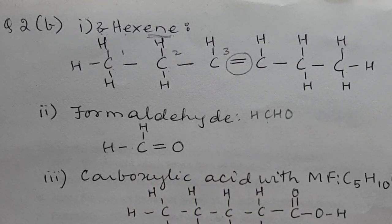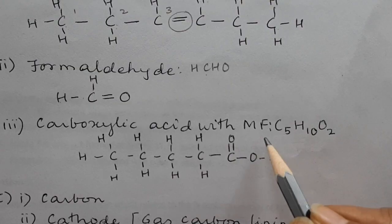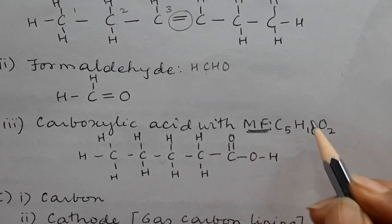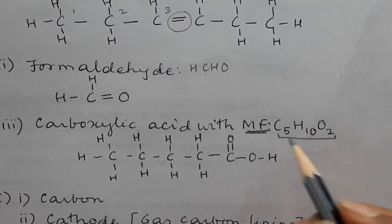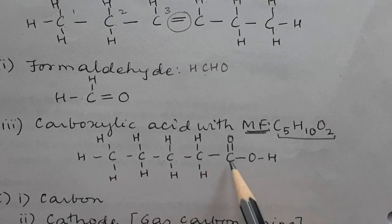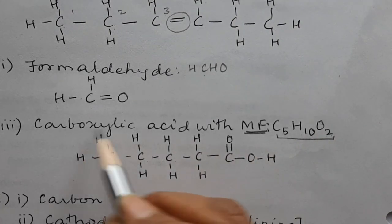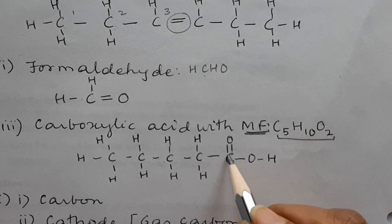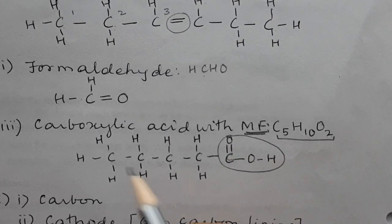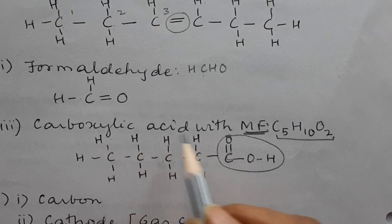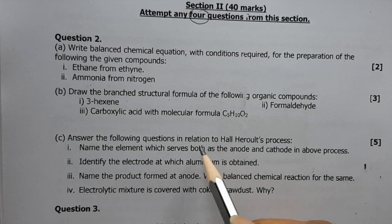(iii) Carboxylic acid with molecular formula C₅H₁₀O₂: draw five carbons with the carboxylic group (–C(=O)OH) at one end and fill the remaining valencies with hydrogen atoms. That is the branch structural formula for pentanoic acid.